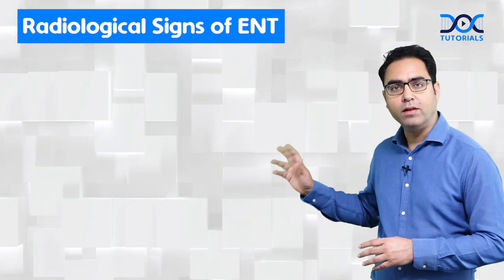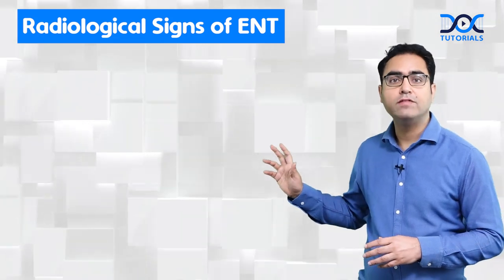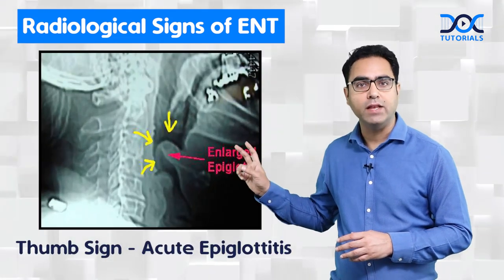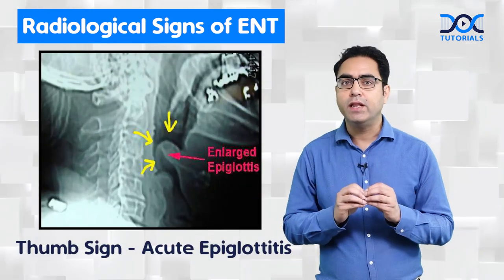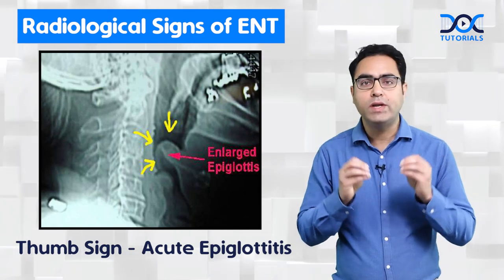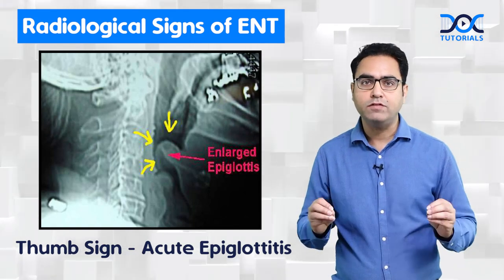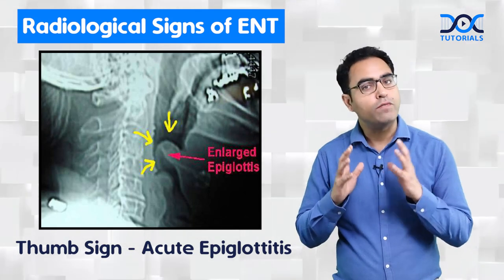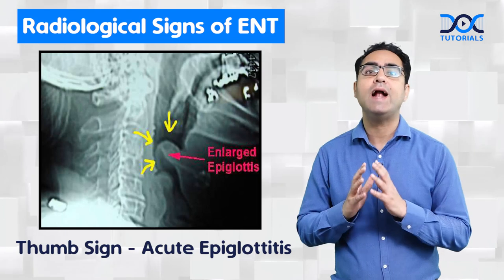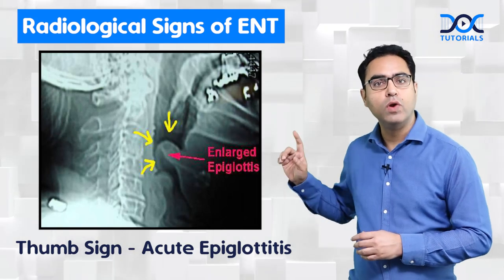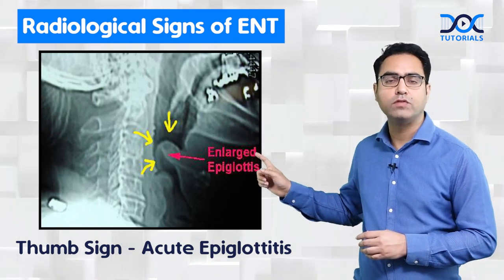Look at number one. The first one is the thumb sign or the thumb print sign. It is seen in a patient of acute epiglottitis when you do an x-ray soft tissue neck lateral view. Can you see the swollen epiglottis which looks like a thumb?